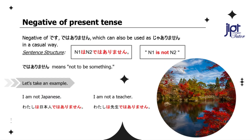Now let's learn about the negatives of desu. De wa arimasen, which can also be used as ja arimasen in a casual way. Sentence structure: N1 wa, N2 de wa arimasen. De wa arimasen means 'not to be something' — N1 is not N2. Particle wa is indicating the topic. For example: I am not an engineer.